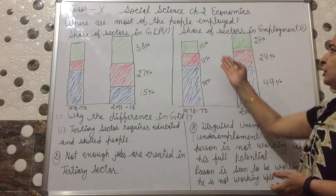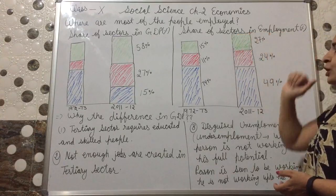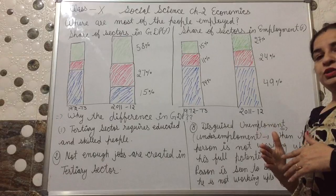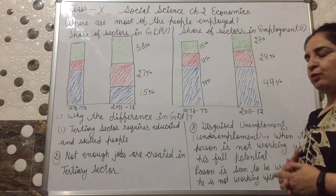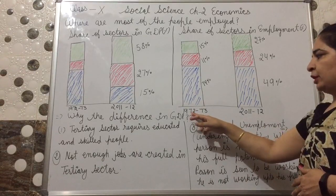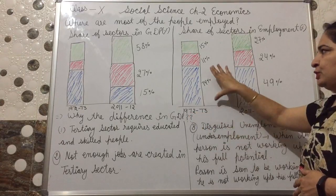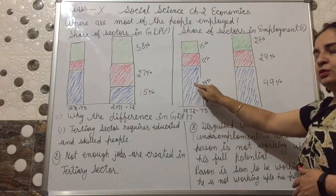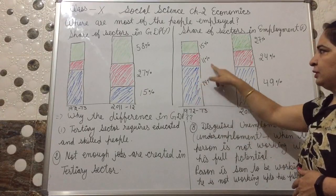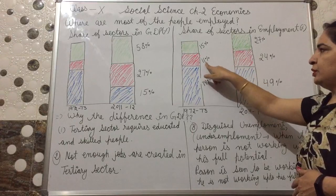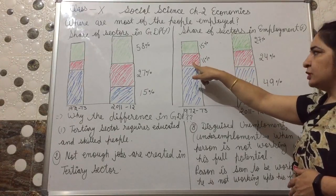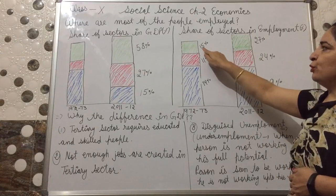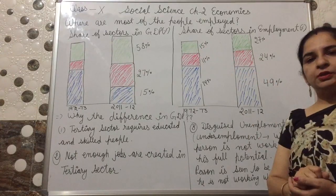Now have a look at this graph — share of sectors in employment. If we talk about employment, which sector provided more employment? In 1972-73, 74% of the population was engaged in the primary sector, 11% in the secondary sector, and only 15% was employed by the tertiary sector.